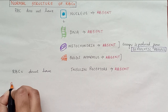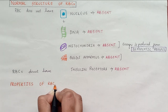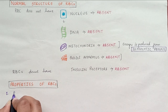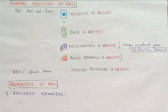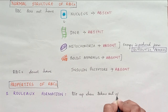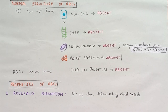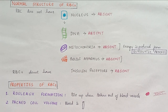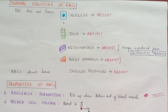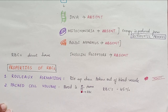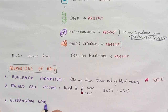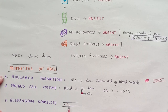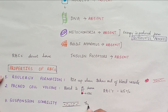Properties of red blood cells: When blood is taken out of the blood vessels, the RBCs pile up — that property is called rouleaux formation. Packed cell volume: when blood is centrifuged, it separates, and the percentage of RBCs is 45%. Suspension stability: in the blood vessels, RBCs remain suspended uniformly.